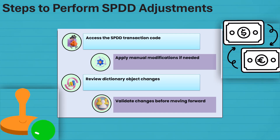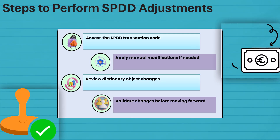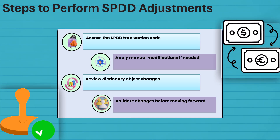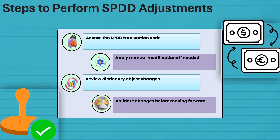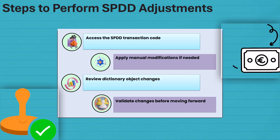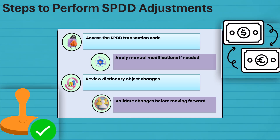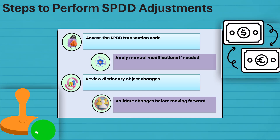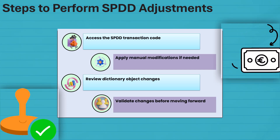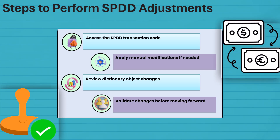Performing SPDD adjustments feels like fixing a puzzle. First, access the transaction code, review changes, and make manual edits. Always double-check before proceeding — your system deserves perfection.